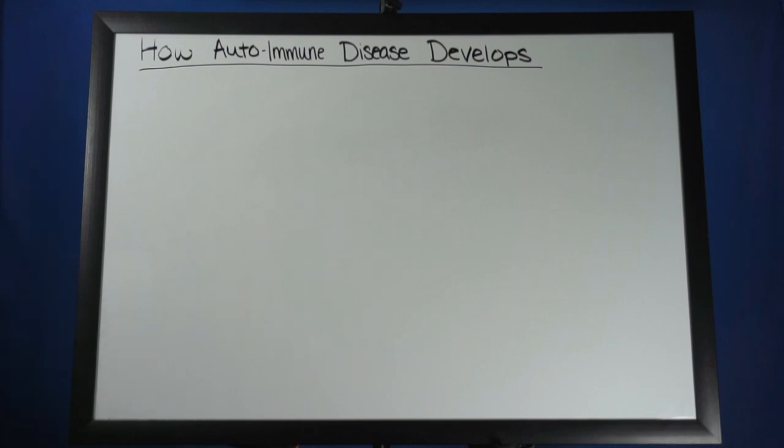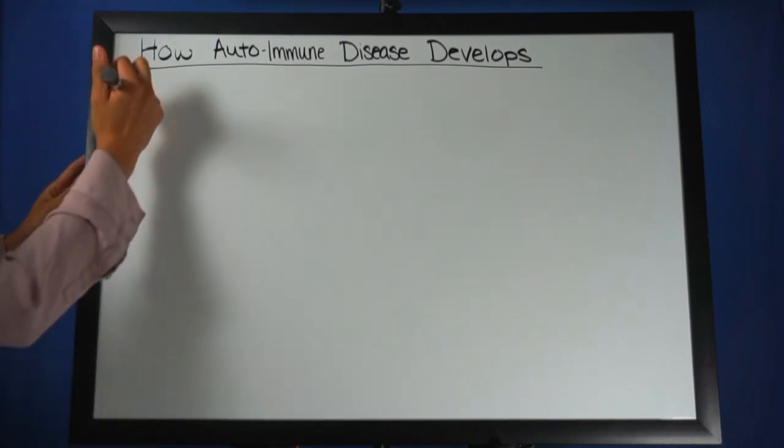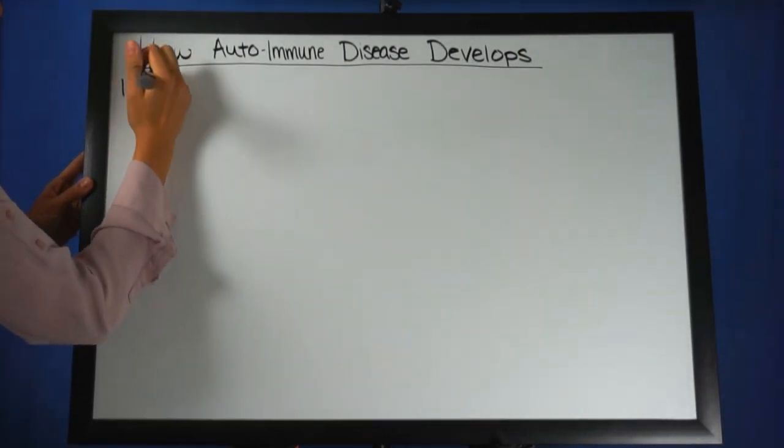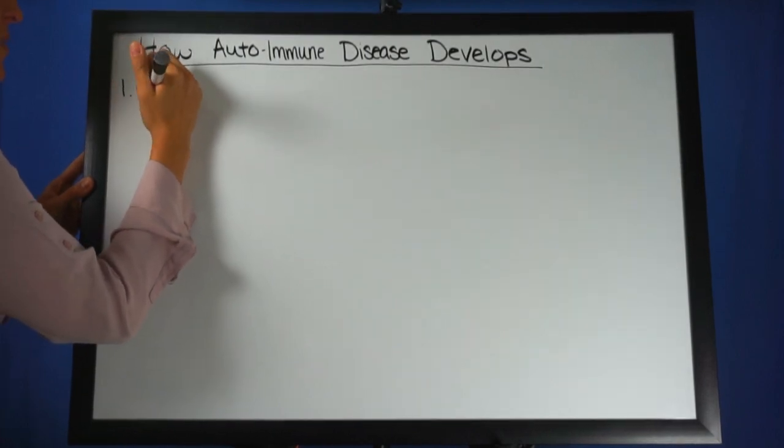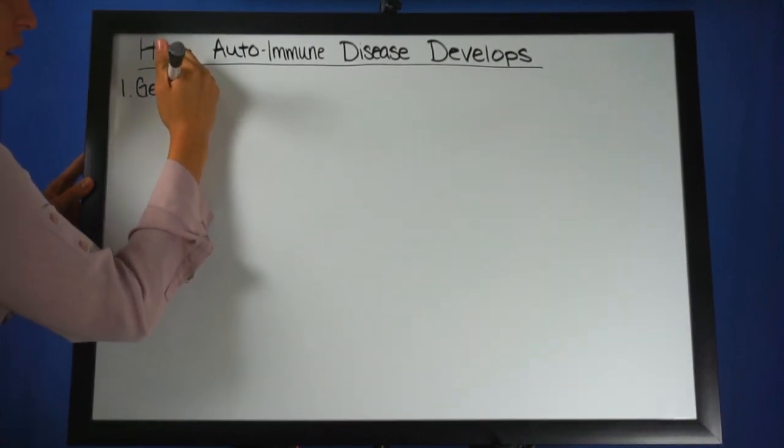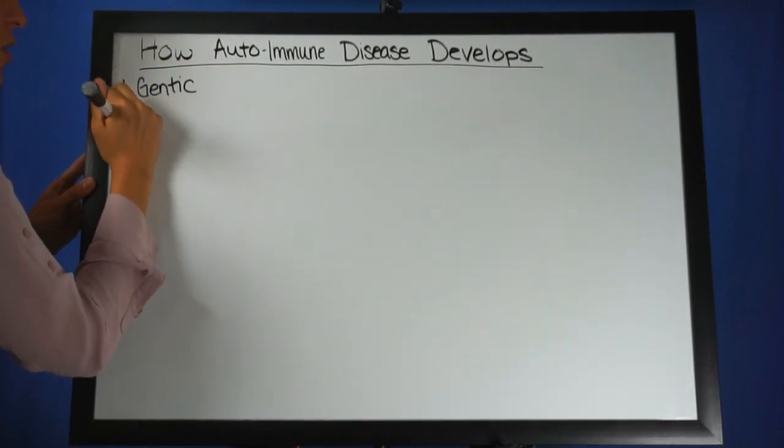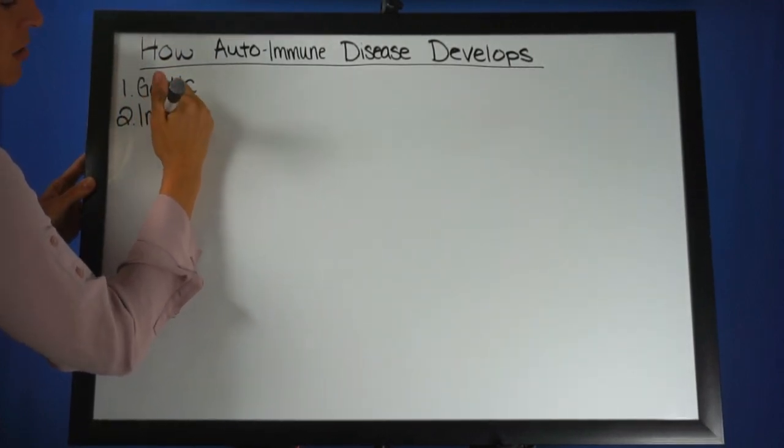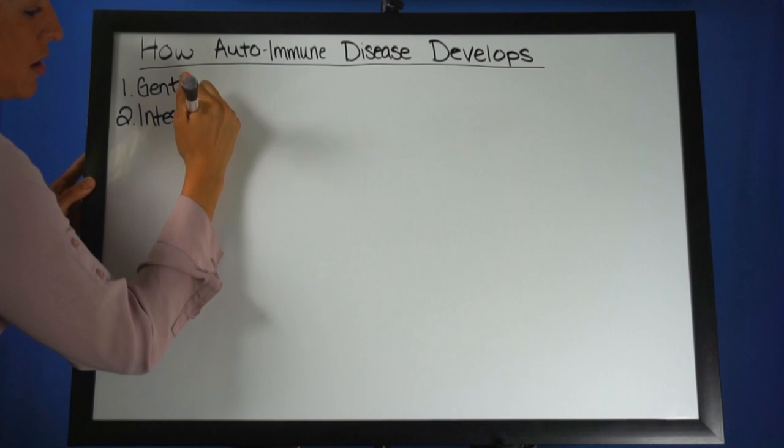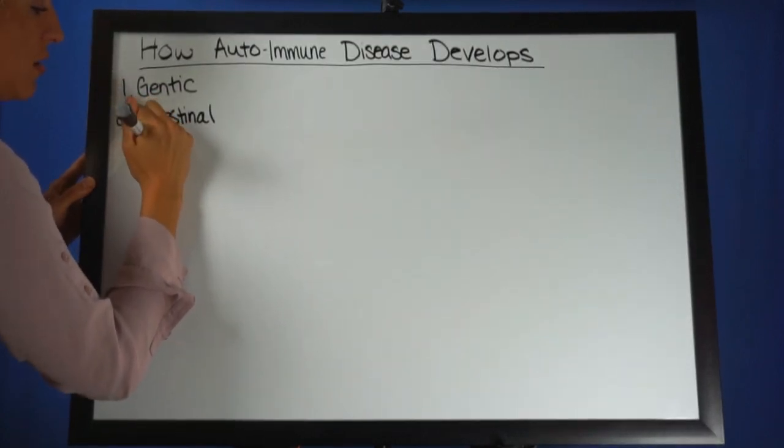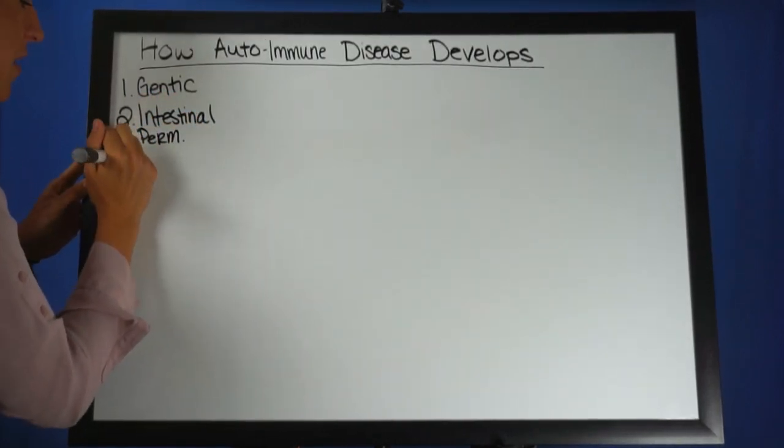First, there are a few things that you have to have in order to acquire an autoimmune disease. One of those things is a genetic predisposition. You have to have intestinal permeability and you have to have a trigger.